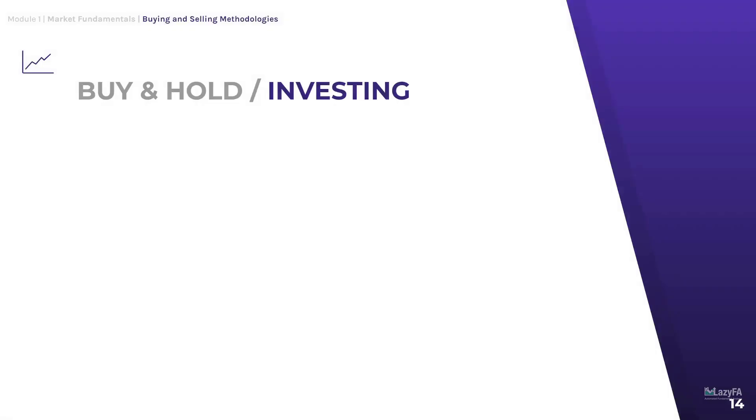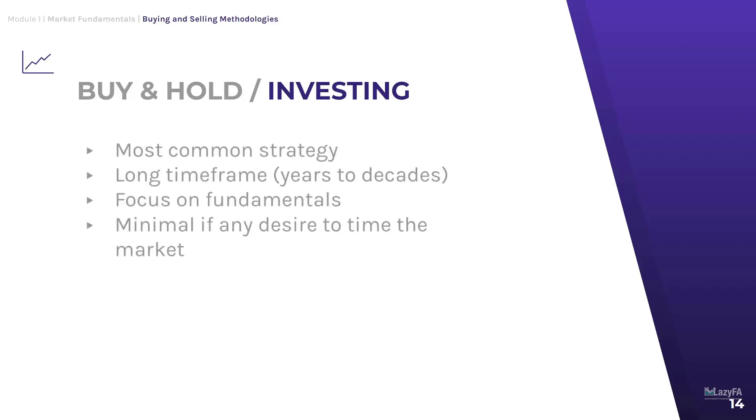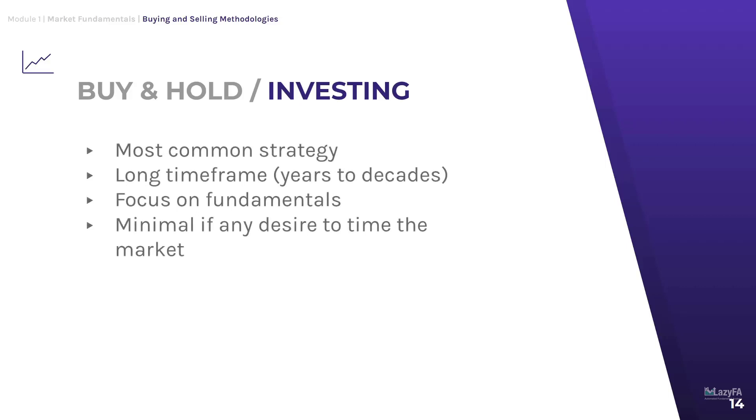The first strategy is buy and hold investing, and this is probably the strategy you're already familiar with. It's the stuff you'll read about in books like The Intelligent Investor and Stock Market for Dummies — those classic foundational books are generally proponents of the buy and hold investing strategy. It's probably the most common strategy in the stock market and uses the longest time frame, usually from years to decades.